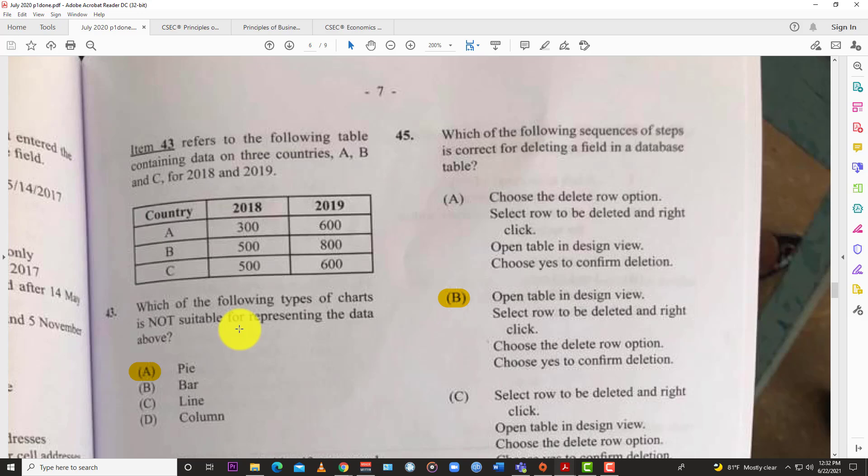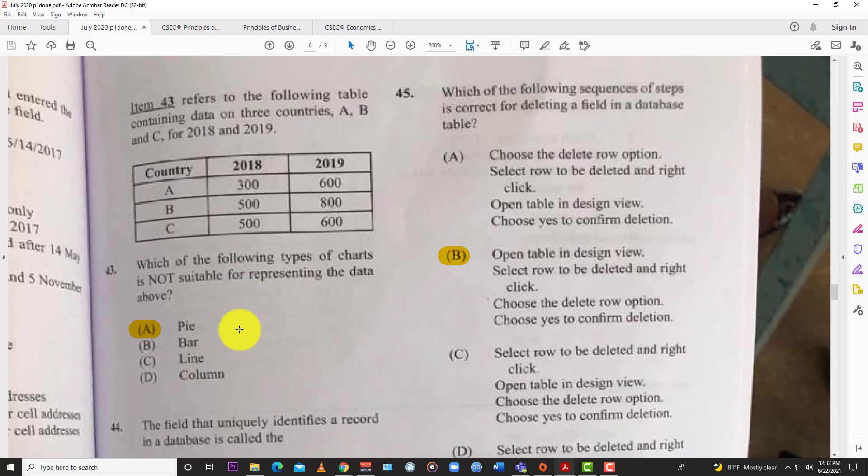Question 45: Which of the following sequences of steps is correct for deleting a field in a database table? You have B: open the table in design view, select row to be deleted and right click, choose the delete row option, choose yes to confirm deletion. And just like that, you have deleted a field in a database table.